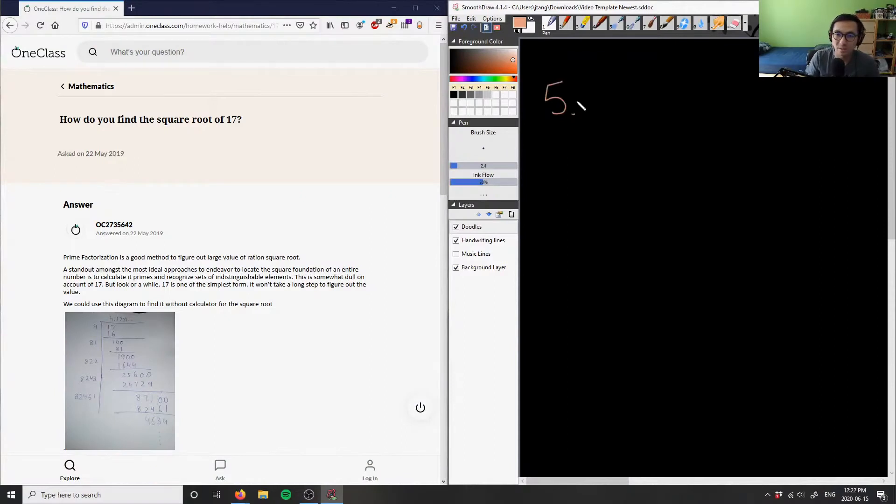Let's ask how do you find the square root of 17. In this case, what we want to do is first check if it's a perfect square.